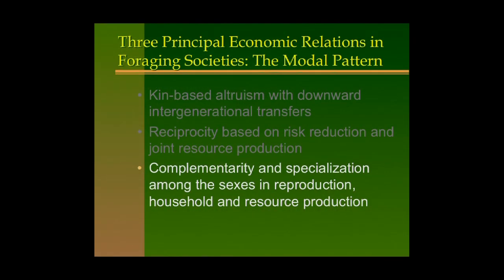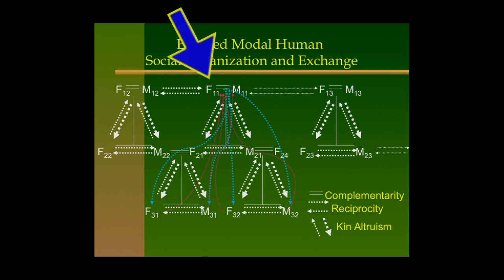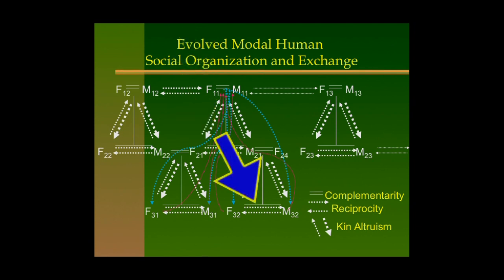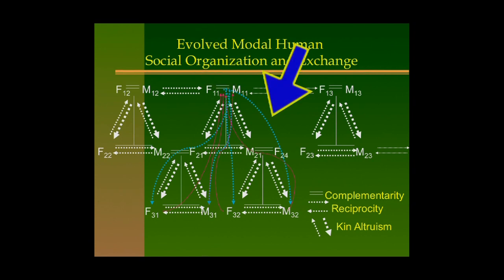There is complementarity and specialization among the sexes in reproduction, household, and resource production. This figure diagrams three generations of families, with arrows characterizing resource flows. Between husbands and wives there is joint production of offspring and the household economy. Downward flows with kin-altruism are represented by thicker arrows, with flows in both directions but always thicker going downward—meaning more resources flow downward than upward.